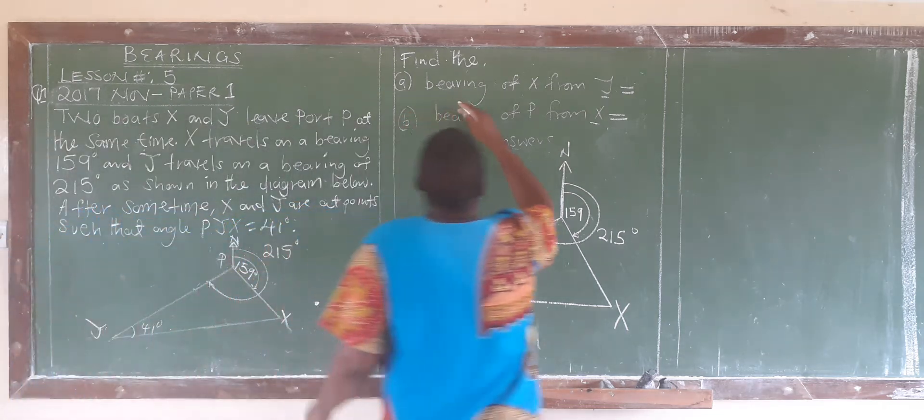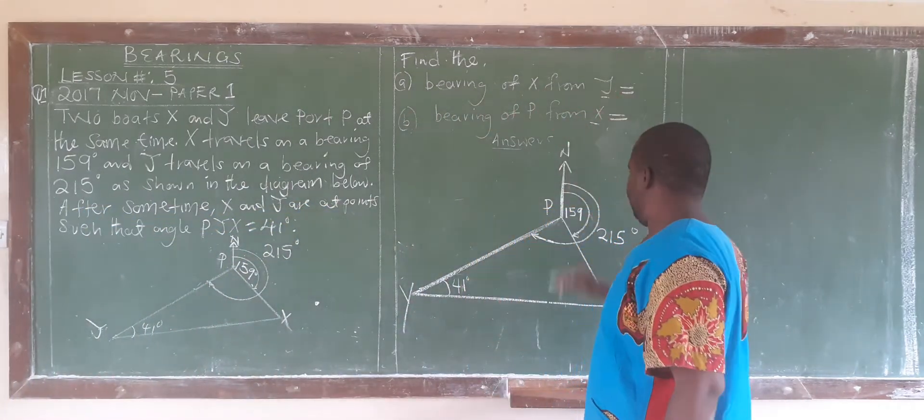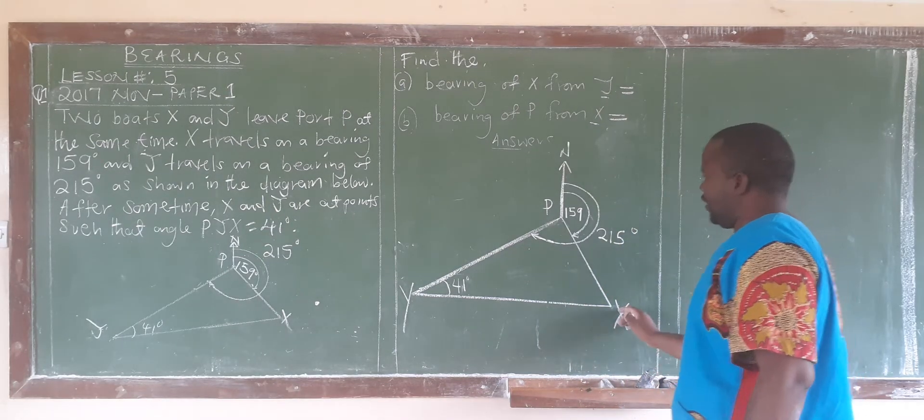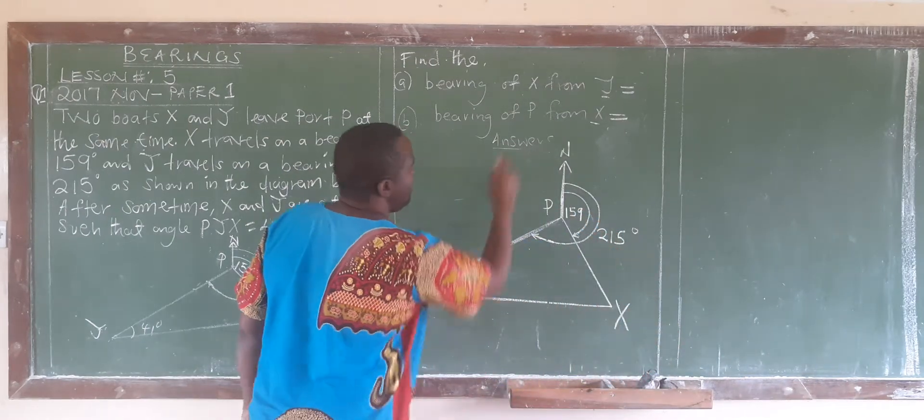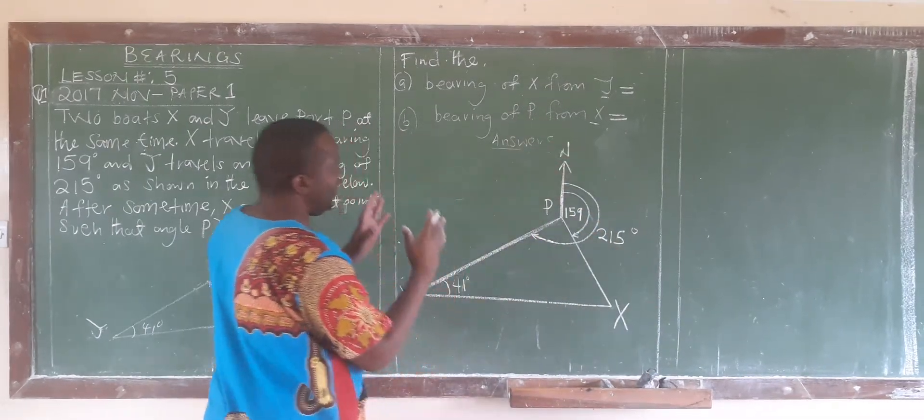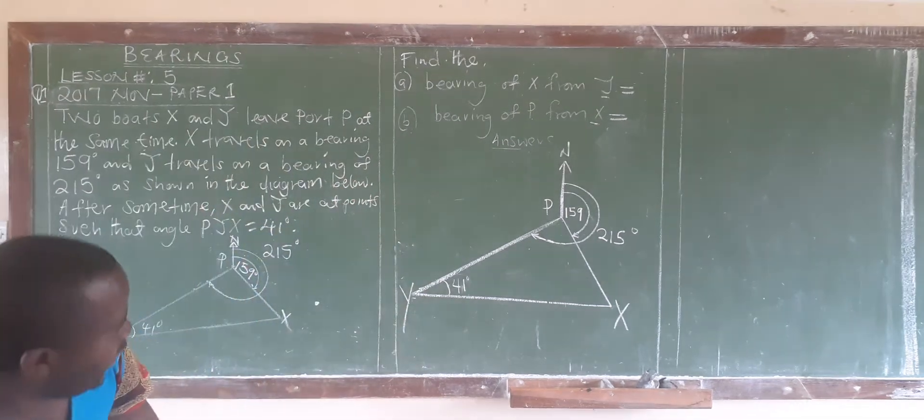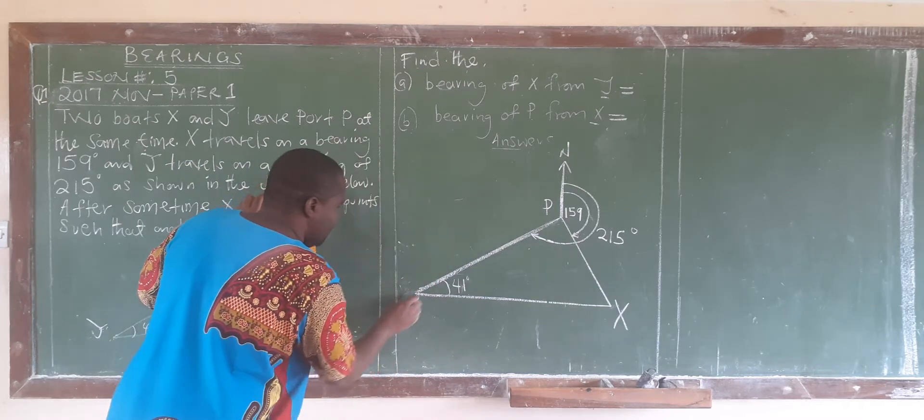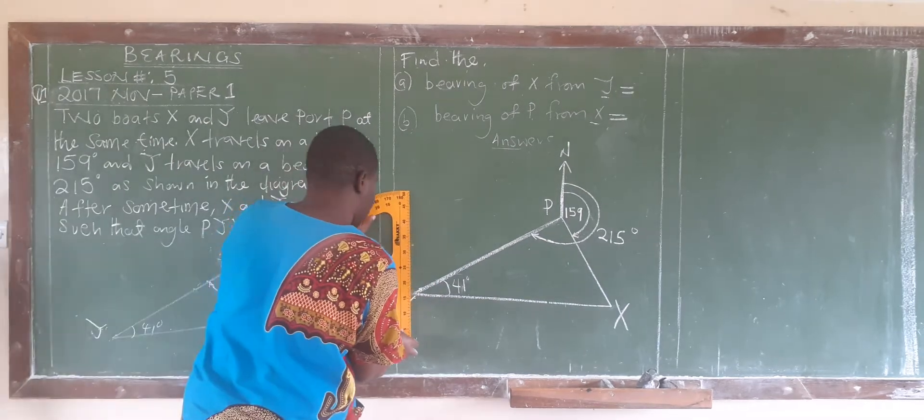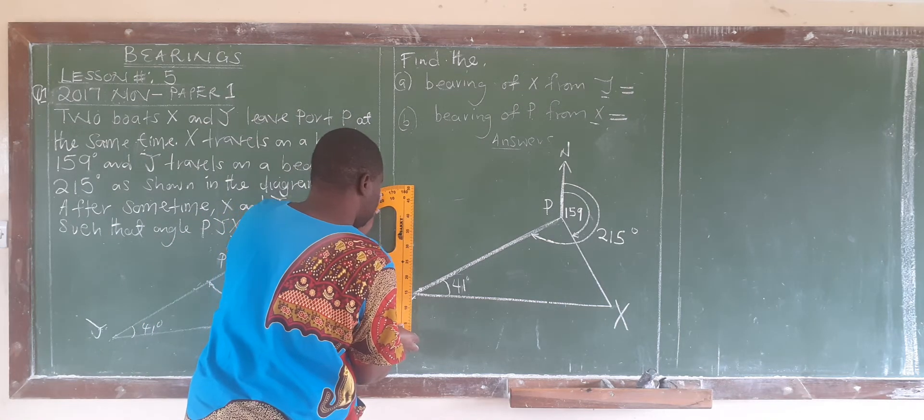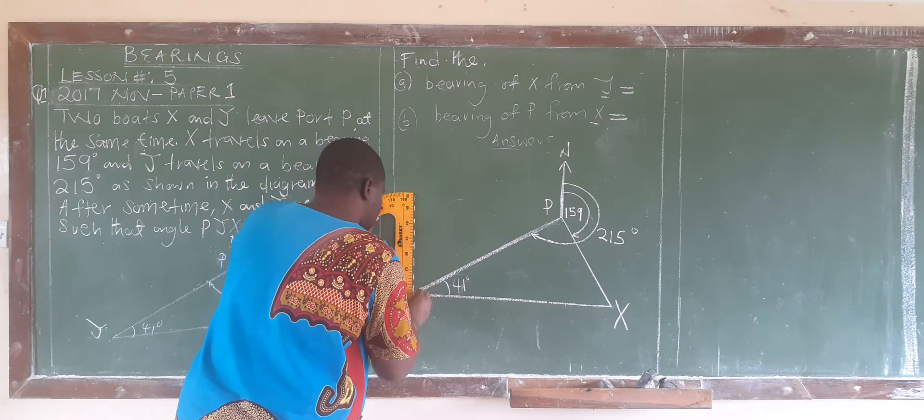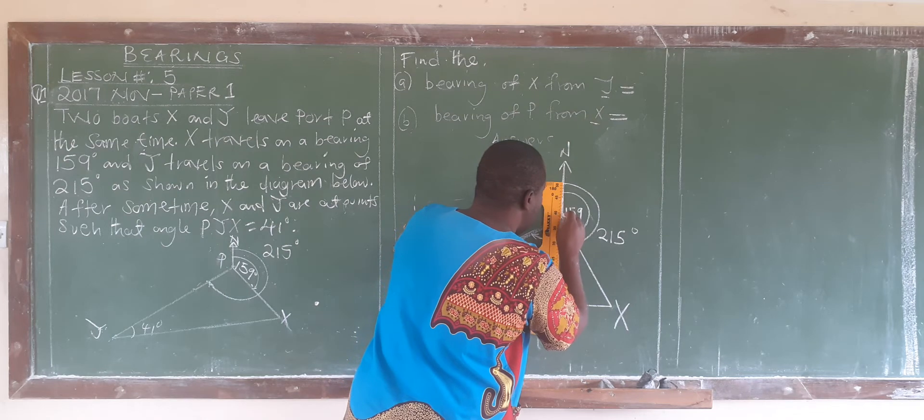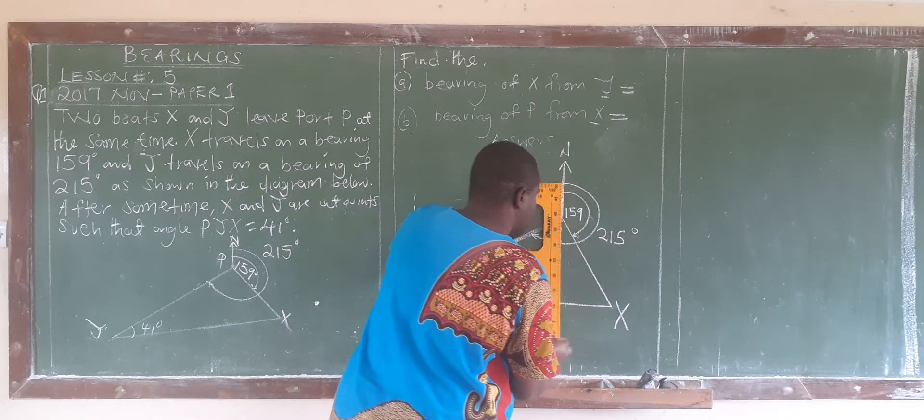So the first question is: find the bearing of X from Y. The second one, P from X. Now, before we look at those, we allow you to create some lines, imaginary lines at these axes, so that our work could be simplified. The essence is to make our work flow easy or simplified.